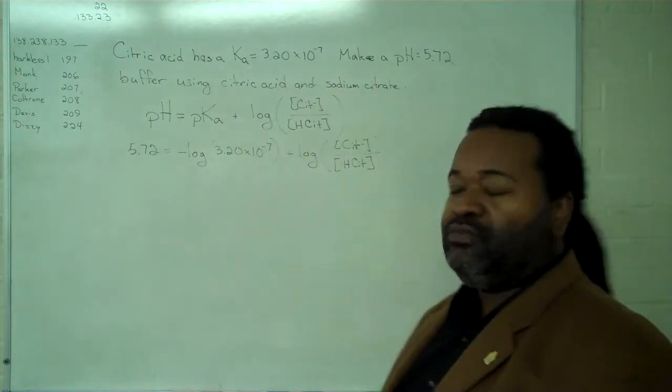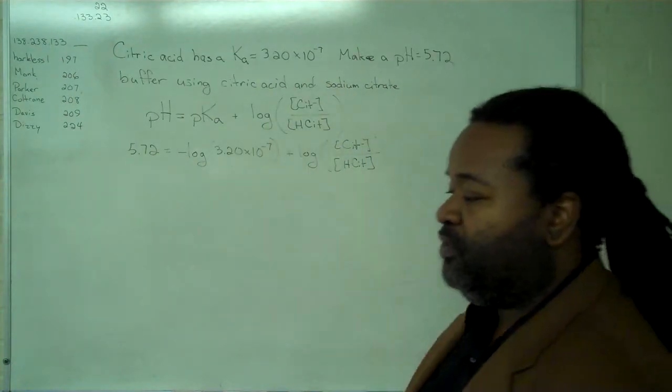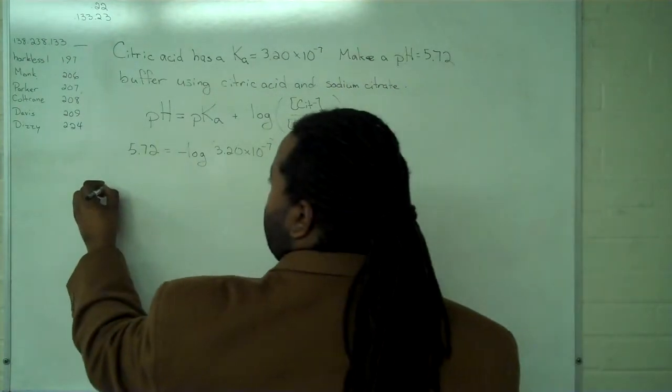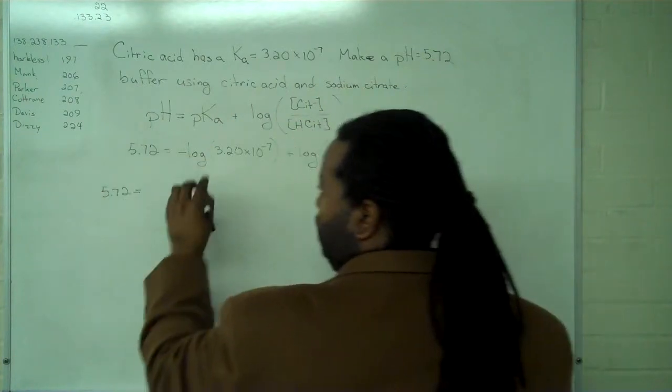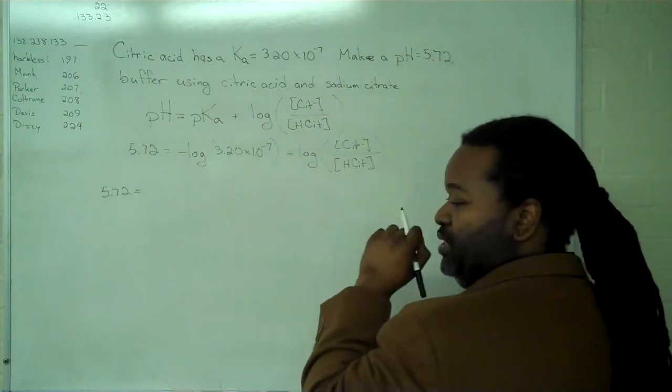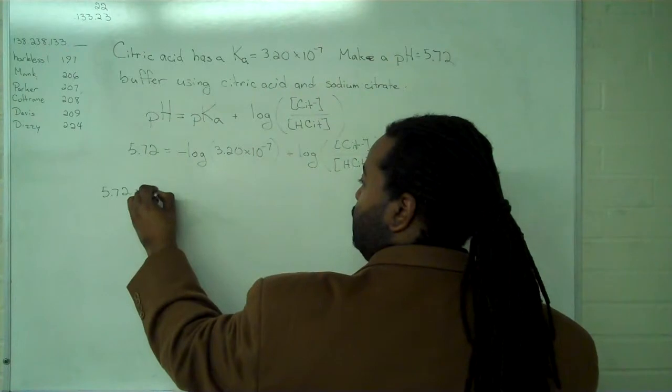So once we have all of this in place, we can simplify this expression. And for the negative log of the Ka, we get 6.49.